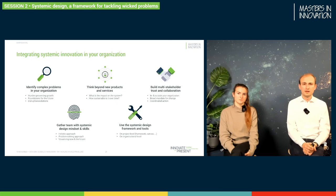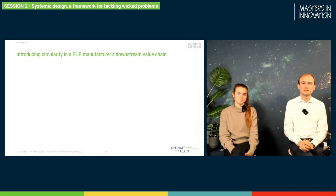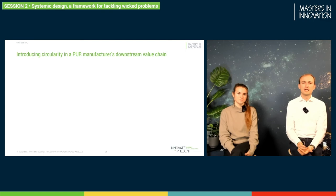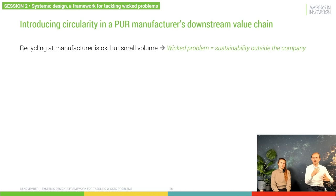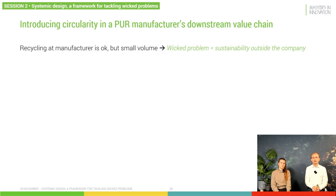One example where we combined all these elements is an engagement where we were asked to introduce circularity in a polyurethane manufacturer's value chain. The issue was that while the manufacturer could chemically recycle some compounds, that's only a small volume and very inefficient. Most of the gains in sustainability lay outside of that organization, in the value network of that manufacturer — making it a wicked problem because there are so many actors involved that you can't just list them on a sheet of paper.